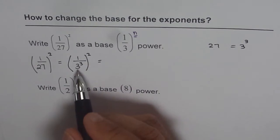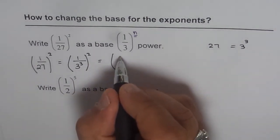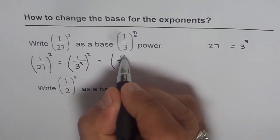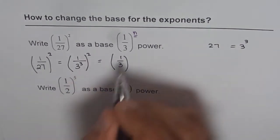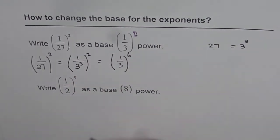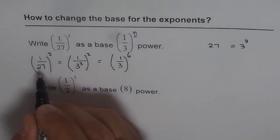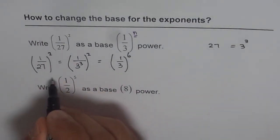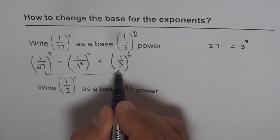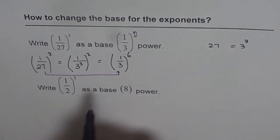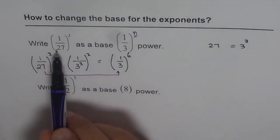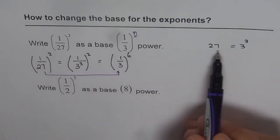Now applying the laws of exponents, what do we get? We get 1 over 3 to the power of 3 times 2, 6. That's what we get. So now you can see we have changed the base. Base was 1 over 27 and we changed it to 1 over 3. The trick was to replace 27 as a number with base 3 and that is the relation.